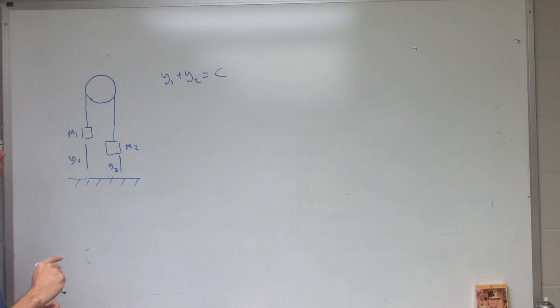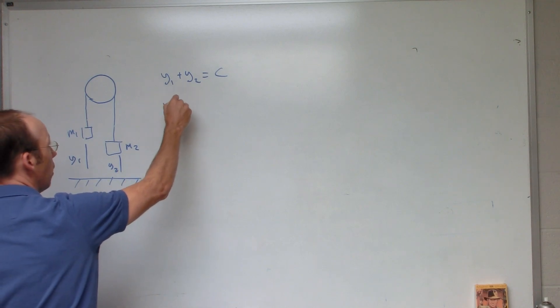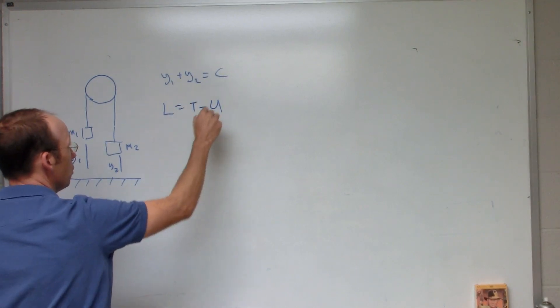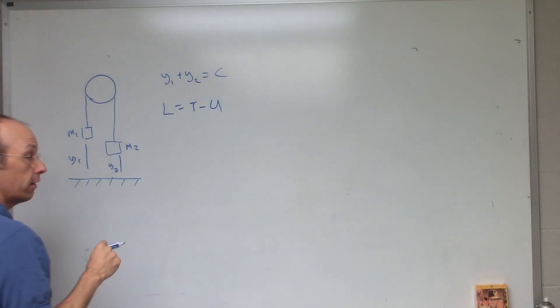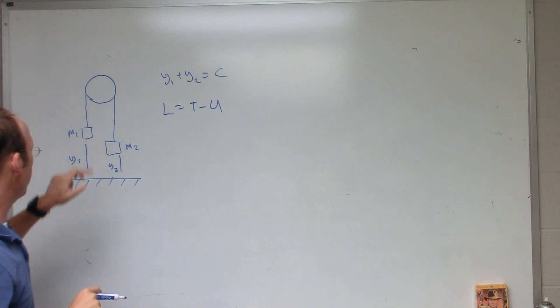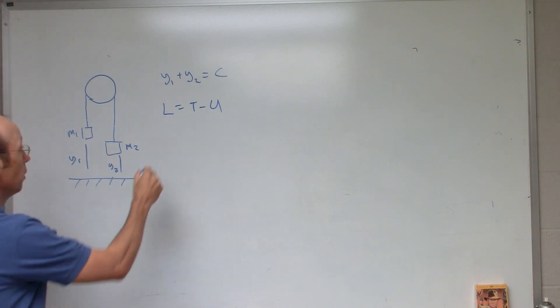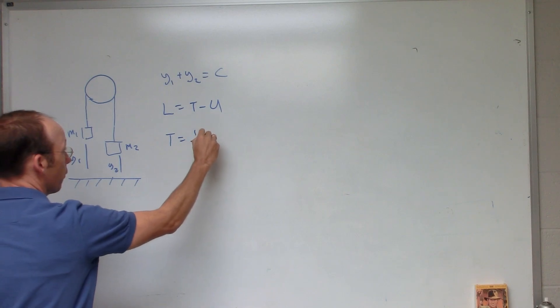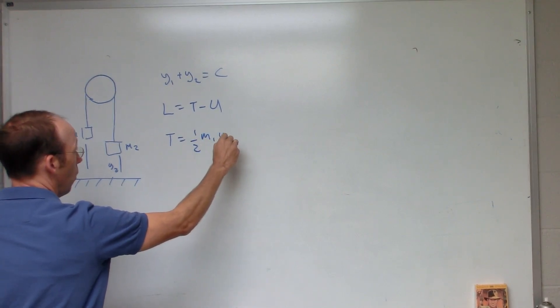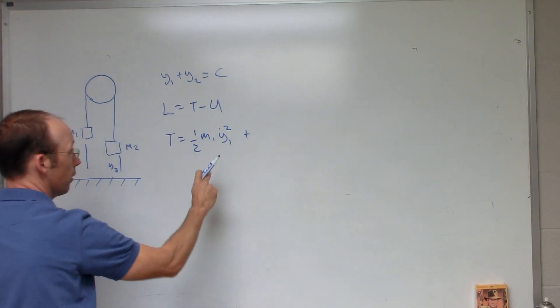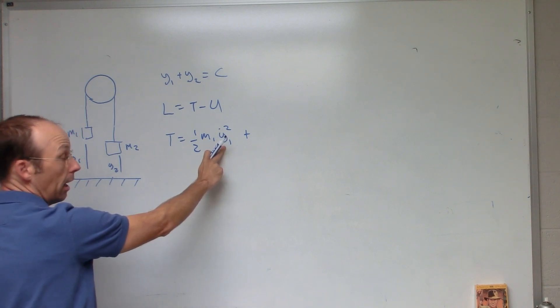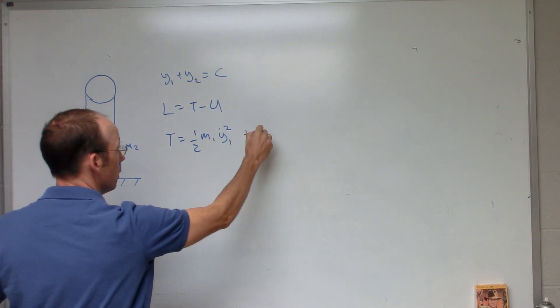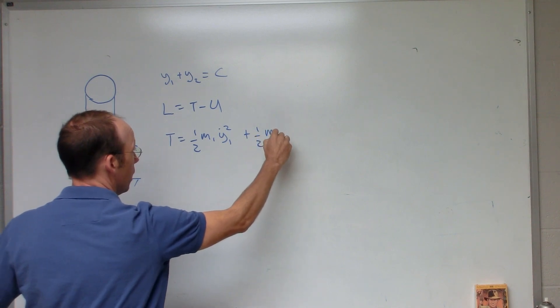Now what we want is to get the Lagrangian. Remember L equals T minus U. So I need to find the kinetic energy. Let's do that one first. So let's say that that one has mass M1, M2. So I could say T equals one half M1 Y1 dot squared. So that's the velocity of Y1 dot, and they have to square it to get the kinetic energy. Plus one half M2 Y2 dot squared.